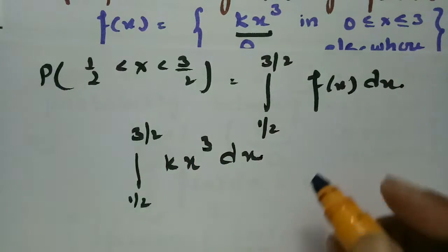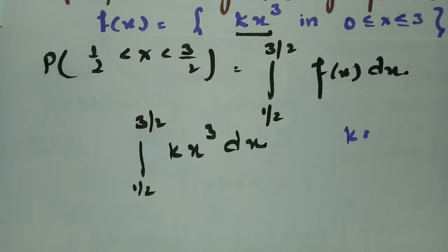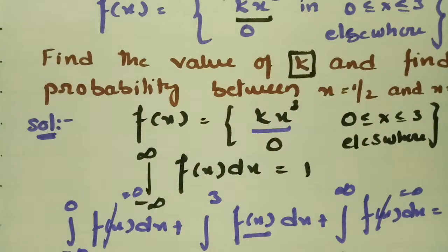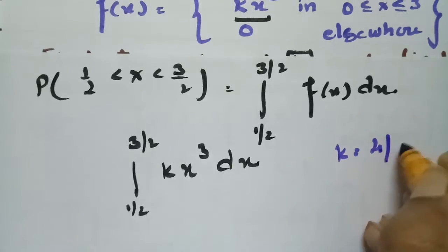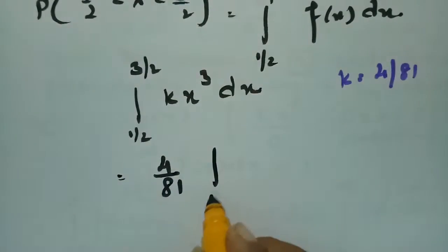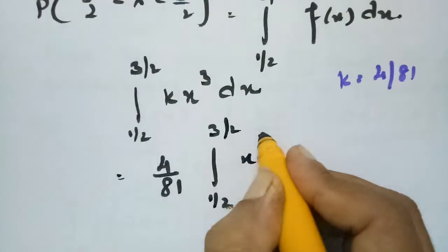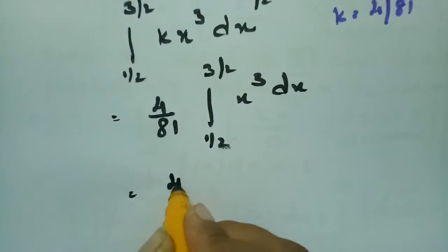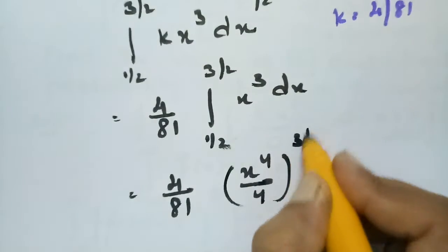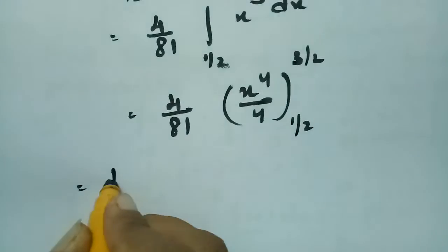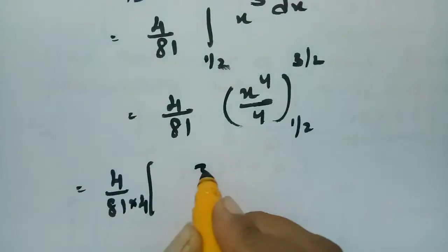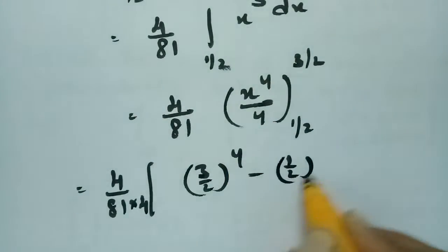Substituting k = 4/81, this becomes (4/81) times the integral from 1/2 to 3/2 of x³ dx. Integrating gives (4/81) times x⁴/4 evaluated between 1/2 and 3/2. Bringing the 4 outside, this simplifies to (1/81) times [(3/2)⁴ − (1/2)⁴].